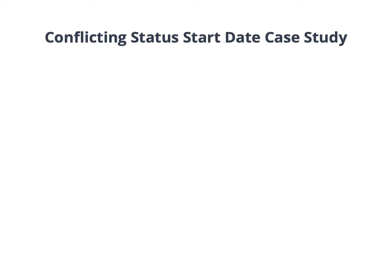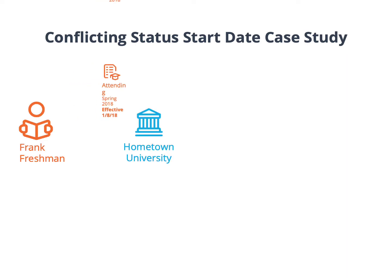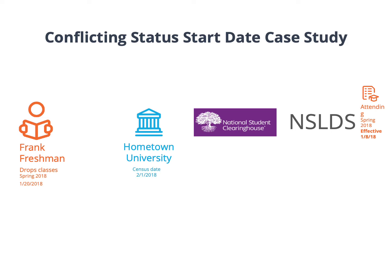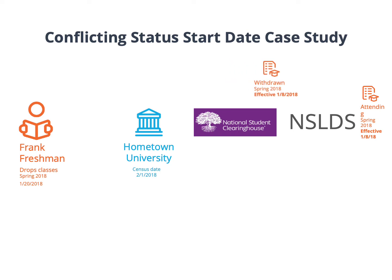Now we will go over a case study on this scenario. Frank Freshman is a new student at Hometown University. Frank was enrolled full-time for the spring term effective January 8, 2018. The full-time status was reported to the clearinghouse and subsequently to NSLDS. Frank dropped all of his courses before the census date and was considered not enrolled for the term. After Frank dropped all of his courses, Hometown University reported Frank to the clearinghouse as withdrawn effective January 8, 2018. After reporting this withdrawn status to NSLDS, an Error 32 is returned.